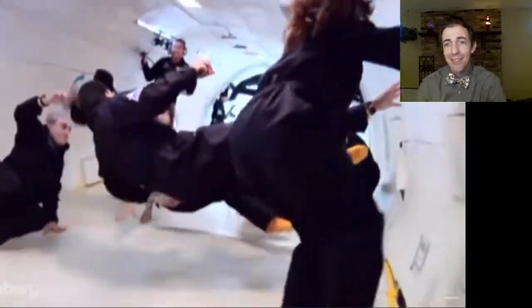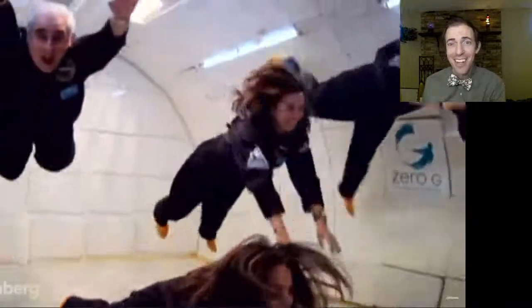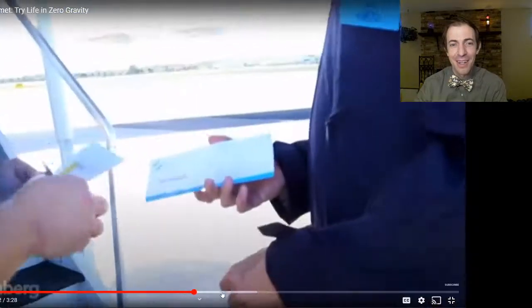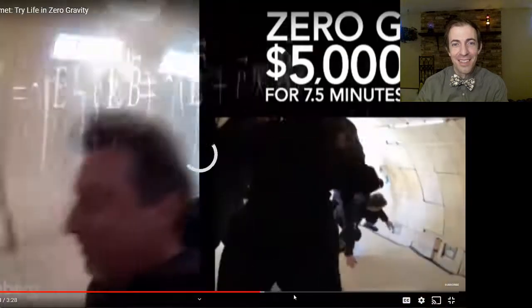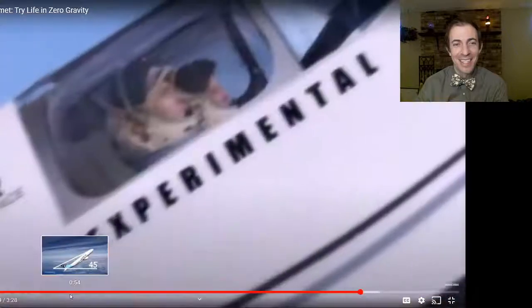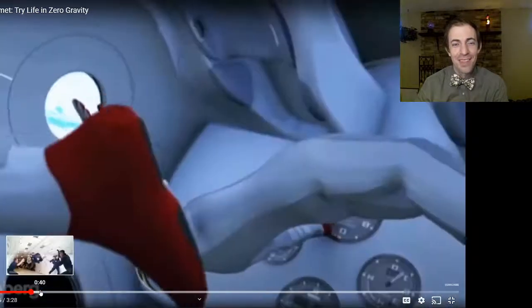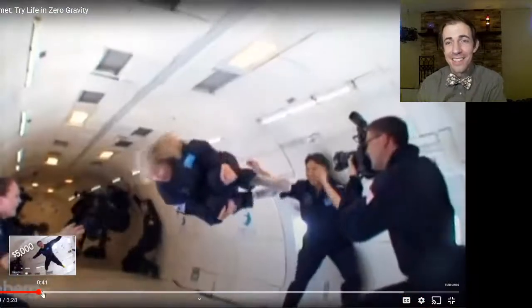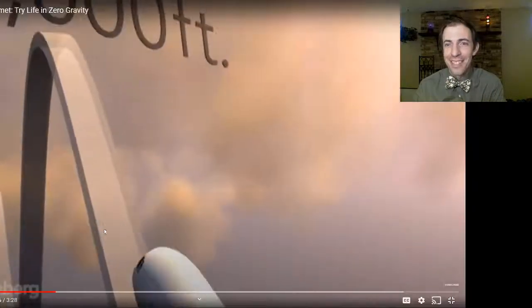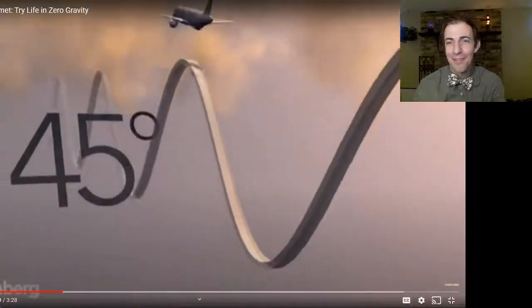So in the Vomit Comet, they actually start you out on the ground. You're just laying there because most of the flight, you do have a perceived weight. But once it gets to the top of this parabolic arc, you'll notice that people start floating and they're flying around here. It's pretty expensive to fly in the Vomit Comet. It's a dream of mine. I've never had the opportunity to do it because I just don't have the money to make it happen. And one of the reasons that this is used is to train astronauts for that feeling of weightlessness. But you'll see all sorts of examples of people using it for different cool effects.